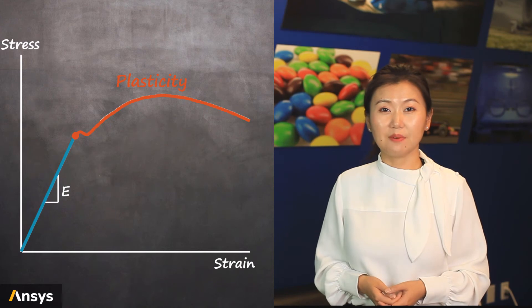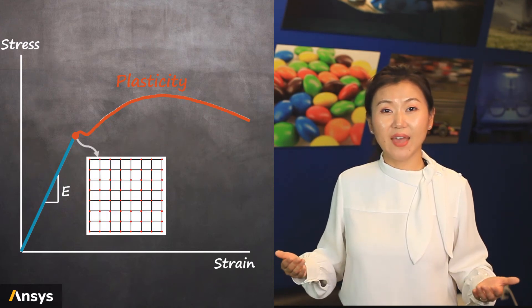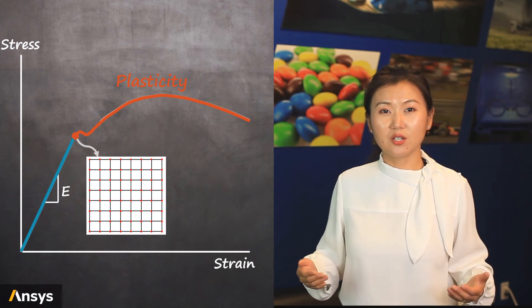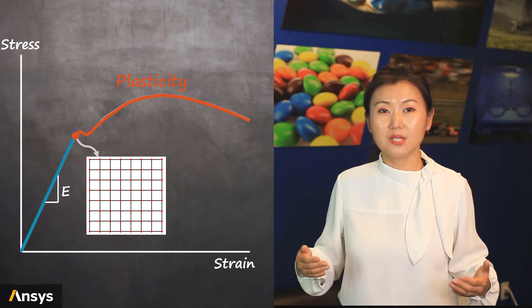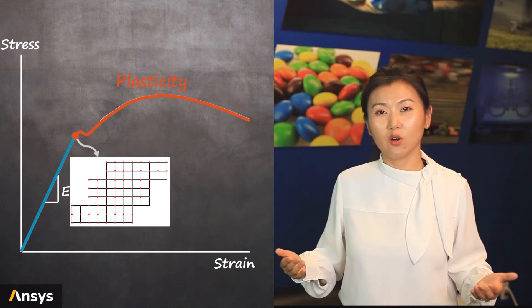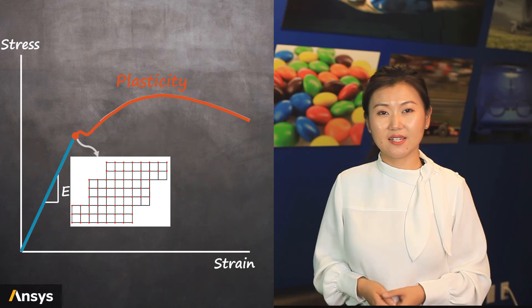Why does plastic deformation happen for materials? It results from slip between planes of atoms due to shear stresses. This dislocation motion is essentially atoms in the crystal structure rearranging themselves to have new neighbors. But we're not going to focus at the atom level of the material. We're more interested in the macro behavior of plasticity.